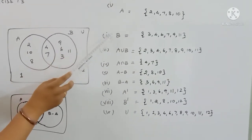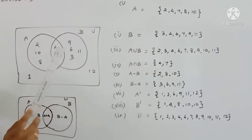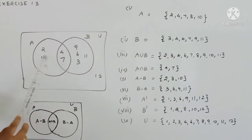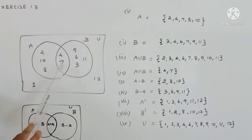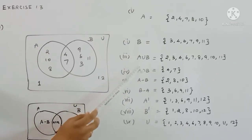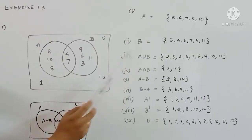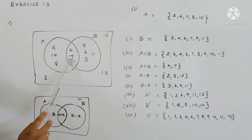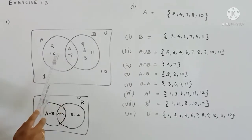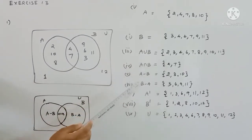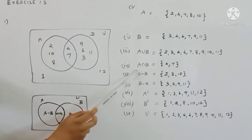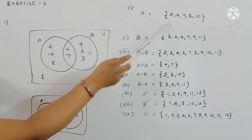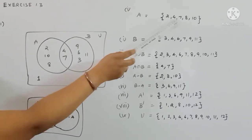Next, A union B — we have all the elements from both A and B combined. A ring and B ring together give us: 2, 3, 4, 6, 7, 8, 9, 10, 11. The common elements in A intersection B are 4 and 7.